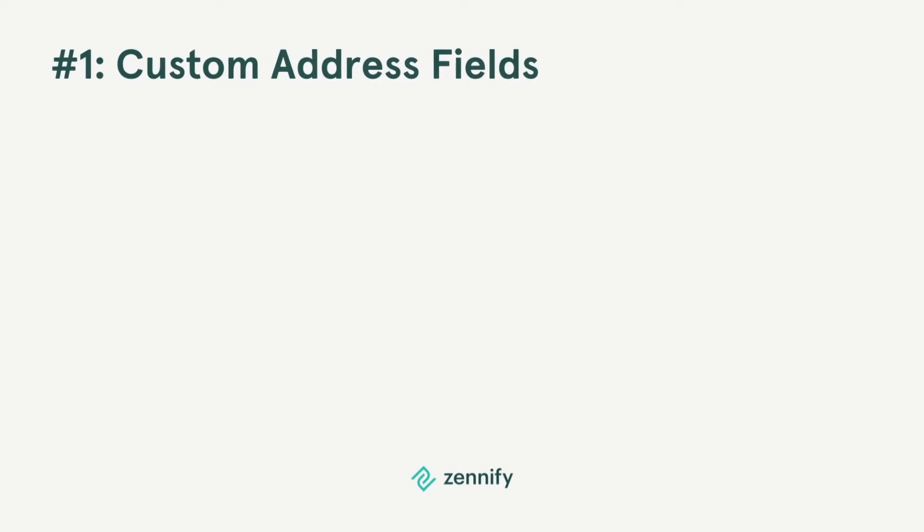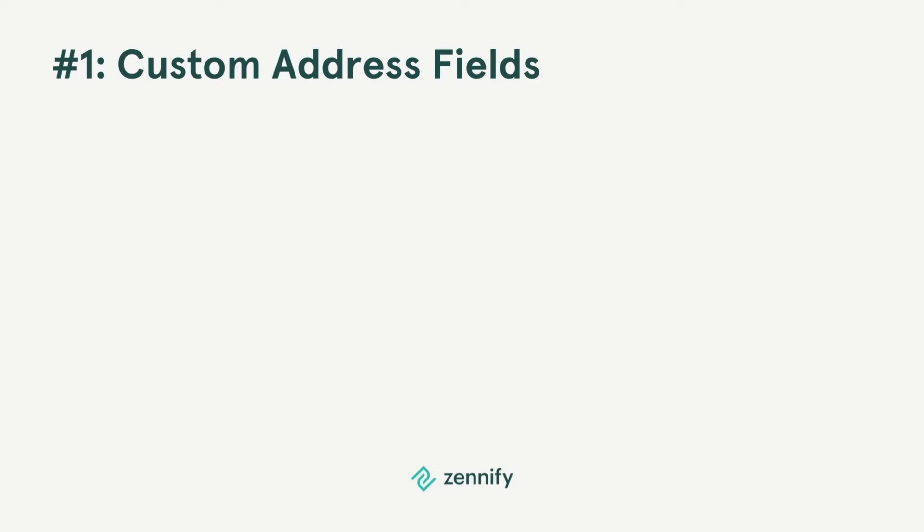Number one: custom address fields. Custom address fields are out of beta testing and are now generally available. Use custom fields like warehouse address with standard and custom objects to improve your data accuracy and user experience.